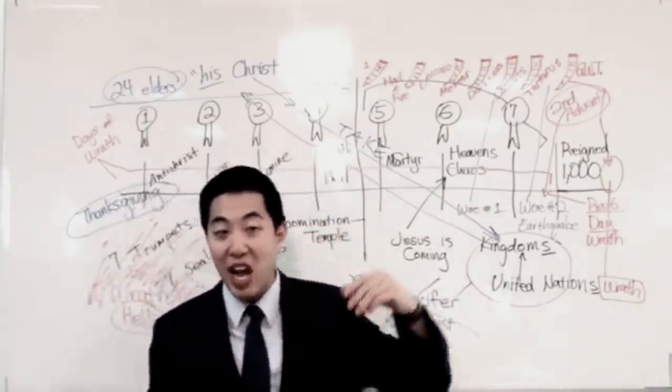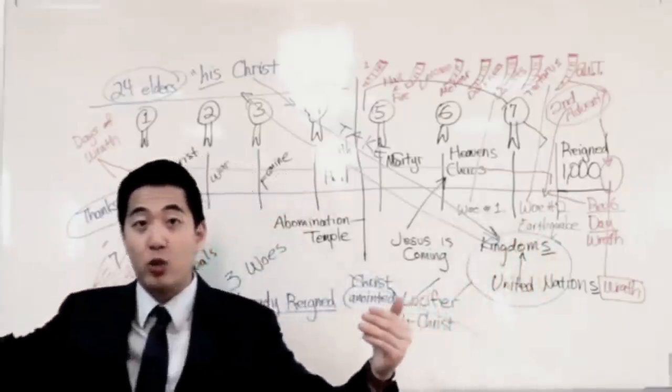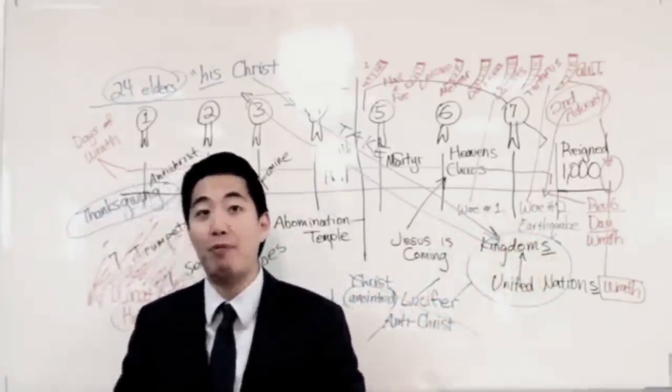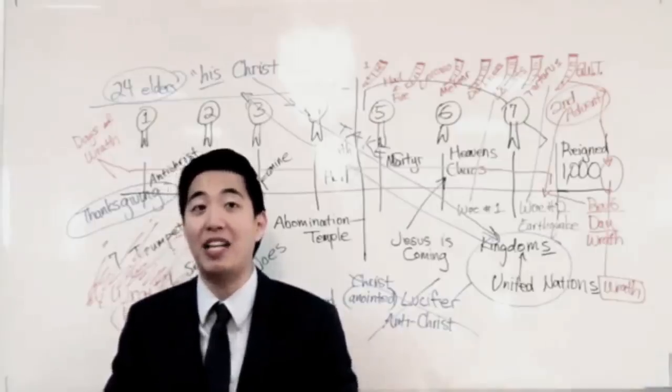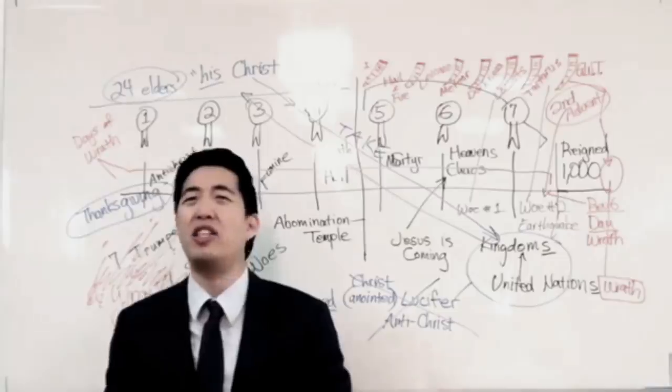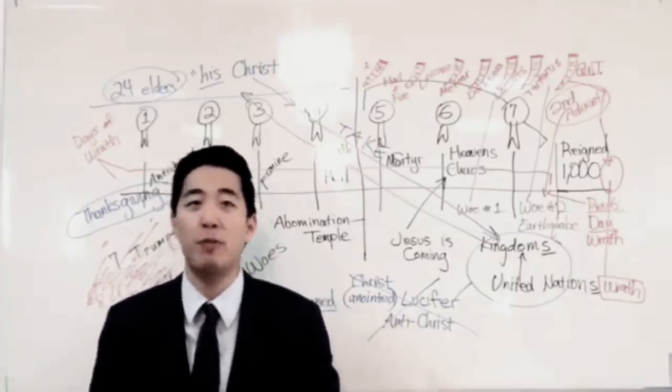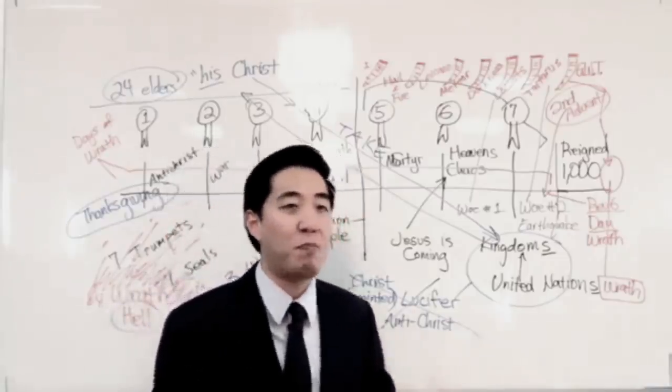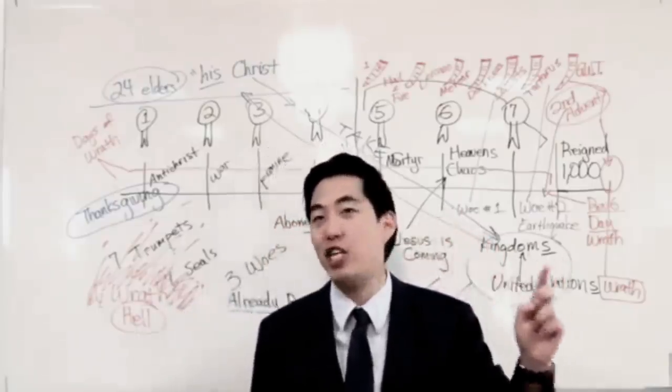A lot of people assume the great white throne judgment is only for lost souls. That's not true. You've got to realize there is a saved group and there's a lost group. But then these independent fundamental Baptists don't have the foggiest idea. And they're like, 'but isn't the judgment seat of Christ before the tribulation?'